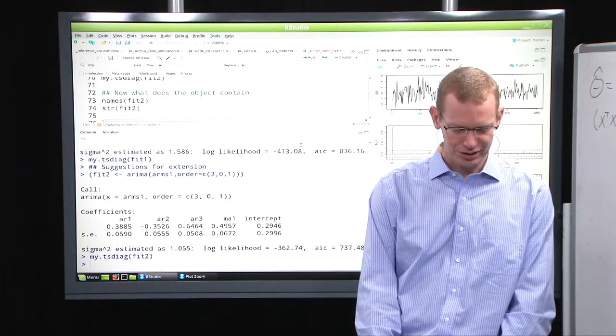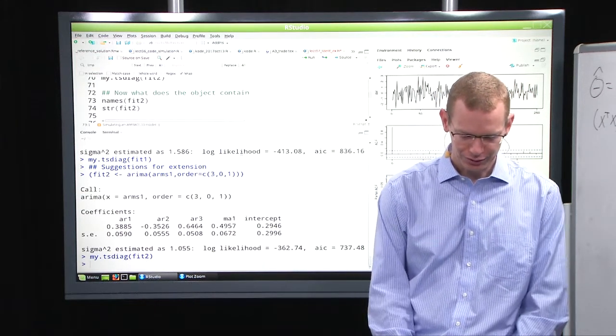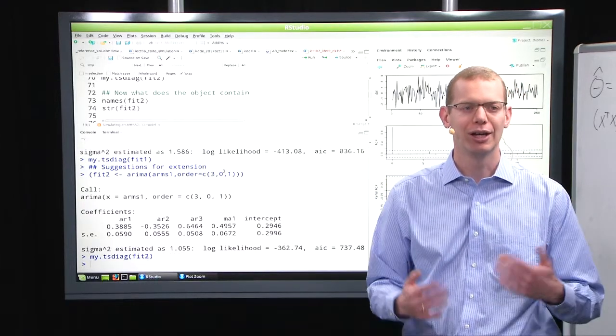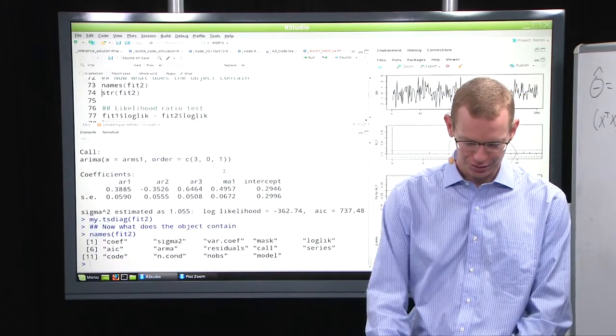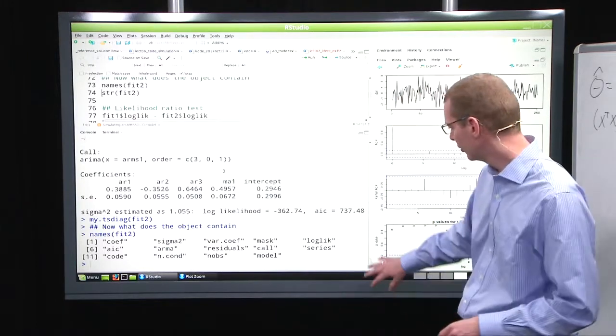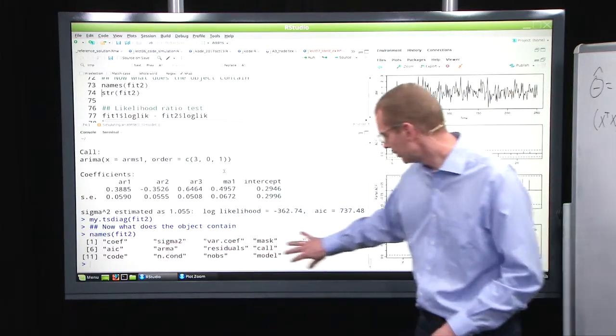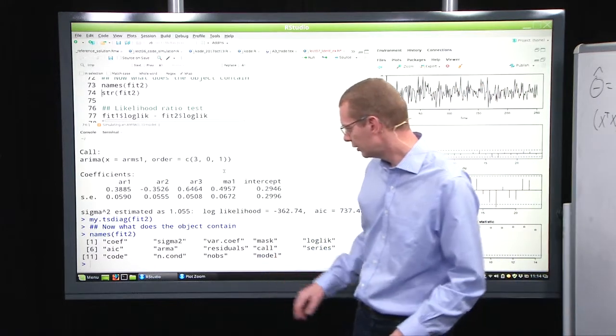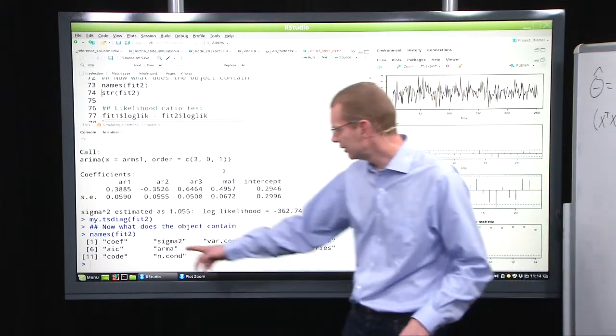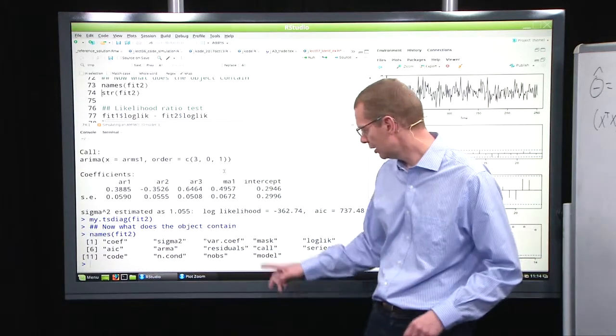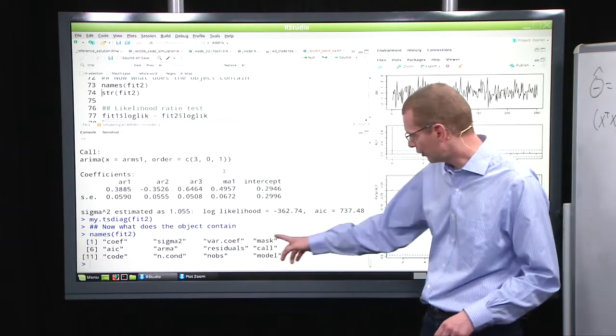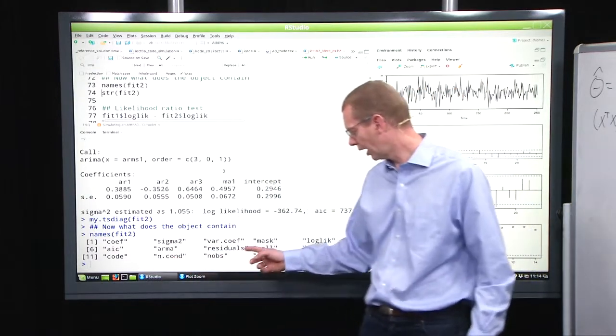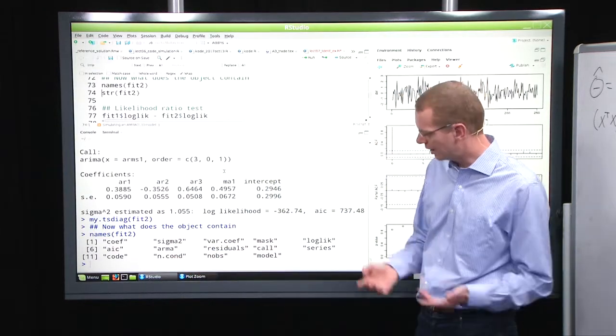Now, whenever we estimate models, what I've done so far is just to print the output of that model. But in practice, there's much more information in here. The model object is a list of these 14 elements here. Contains the coefficient, the estimate of sigma squared, and the mask for the parameters, the log-likelihood, the AIC value, which model we're looking at, all the residuals, and so forth.